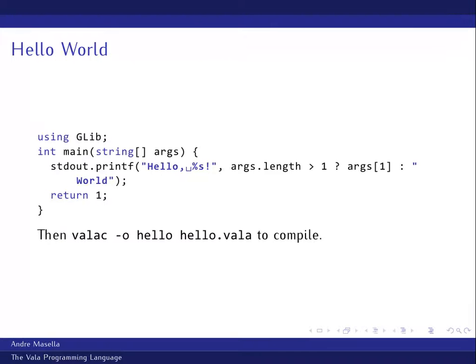Here's Hello World in Vala. At the top there's 'using GLib', which is our import equivalent. We have 'int main(string[] args)'. You'll notice that instead of the usual C arg_c and arg_v, I just get one array. I can use printf to standard output with regular C format conventions. Here I'm checking if I've got multiple arguments; if so I'll print one of them, otherwise I'll put 'world' and return.